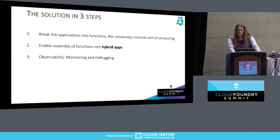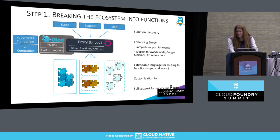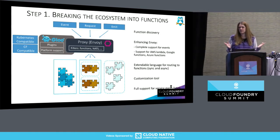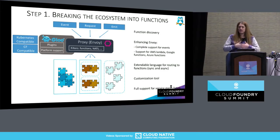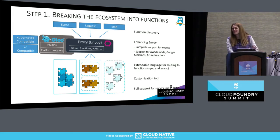To do that, we need to discover and route to all those functions, then assemble them into what I call a hybrid app, and make sure we can debug them. This is exactly what we built — it's called Glue. It's built on Envoy, which is why it's really close to service mesh, since Istio is also built on Envoy. What it does is extend Envoy to route at the function level. We discover functions using serverless HTTP, Swagger, OpenAPI, gRPC, and so on.